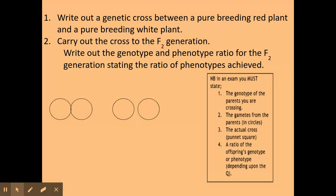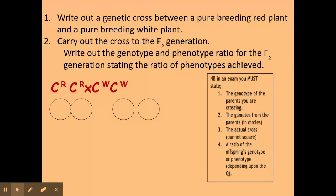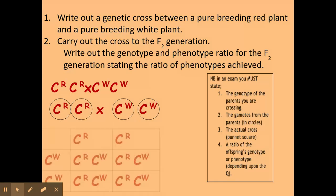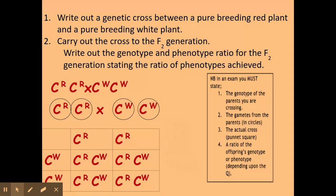Our first cross is between a pure breeding red plant and a pure breeding white. First I have the genotypes of the parents, then I identify the possible gametes, then I do the cross, and finally I make my phenotypic ratio. In this particular example I get 100% pink flowers.